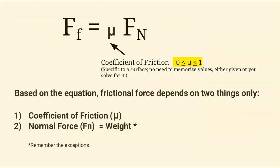This is important — write this down. Sometimes a quiz or test will ask what force of friction depends on. You don't need to memorize it; just look at Equation 8: force of friction equals the coefficient of friction μ times the normal force F_N. So it depends on two things: the coefficient of friction and the normal force, which is your weight. Remember the exceptions for when F_N does not equal F_G.